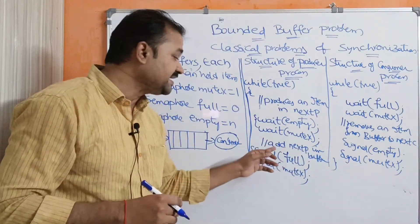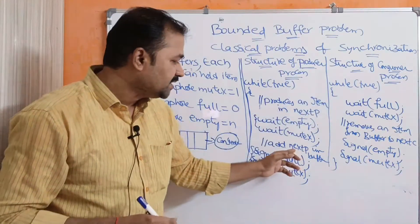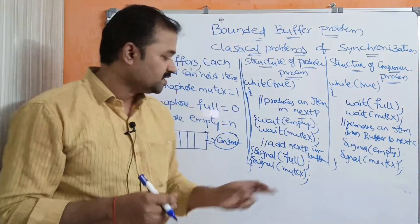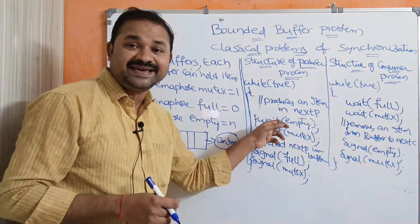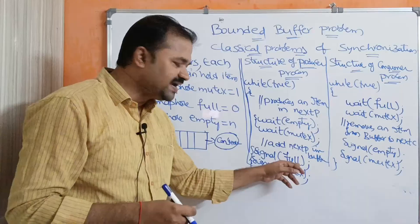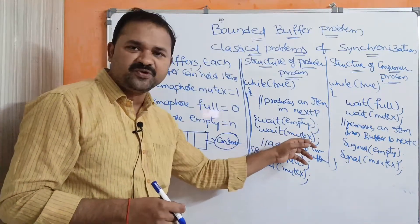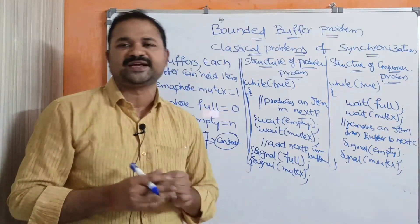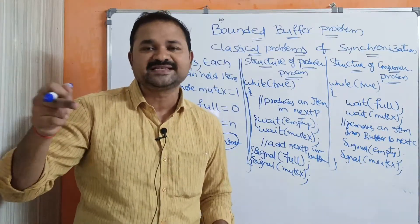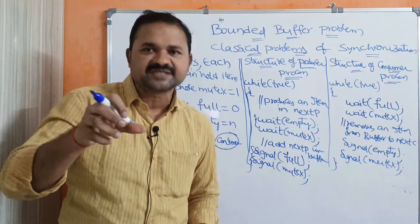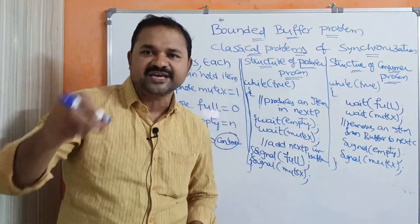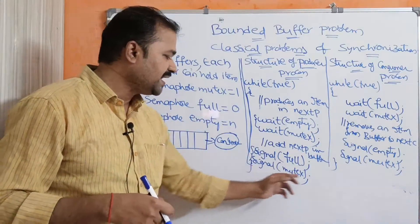This is the critical section where we add nextP into the buffer. Now for the exit section — signal operations. The first signal is signal(full), because in the entry section we had empty (E), so in the exit we get the reverse: full (F). Next is signal(mutex). So the complete producer entry section is: wait(empty), wait(mutex); then critical section; then exit section: signal(full), signal(mutex).